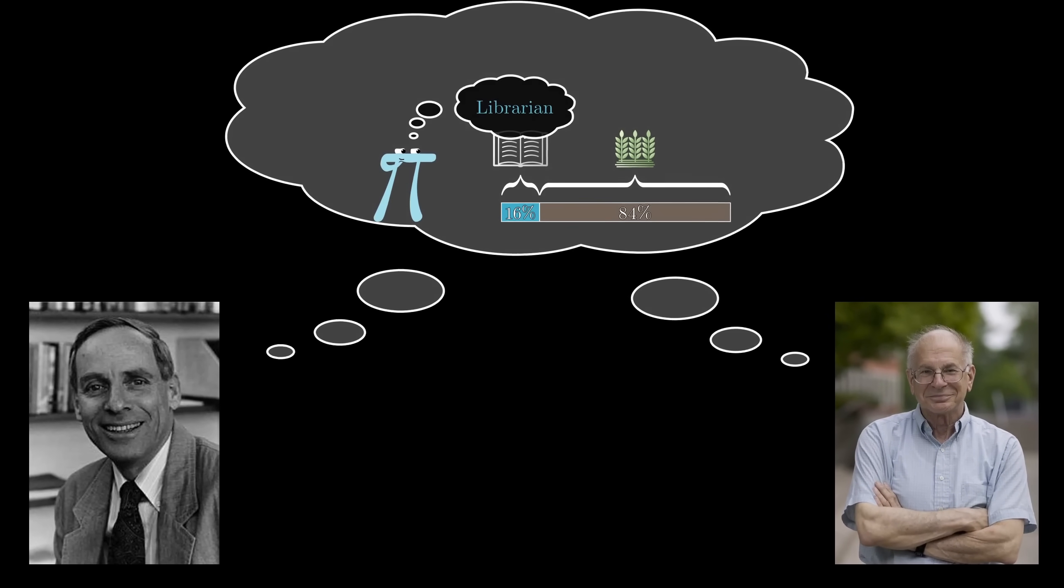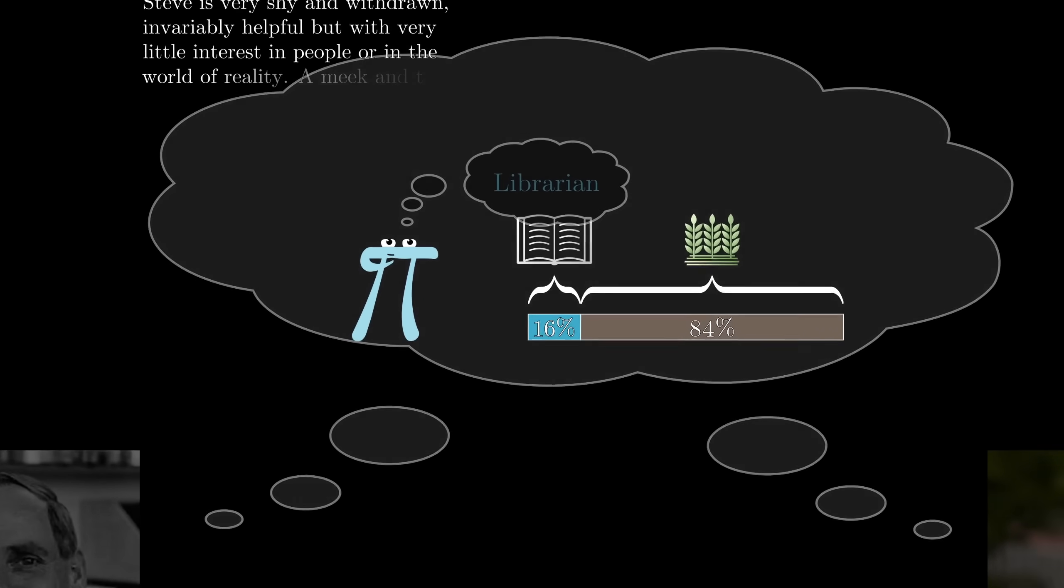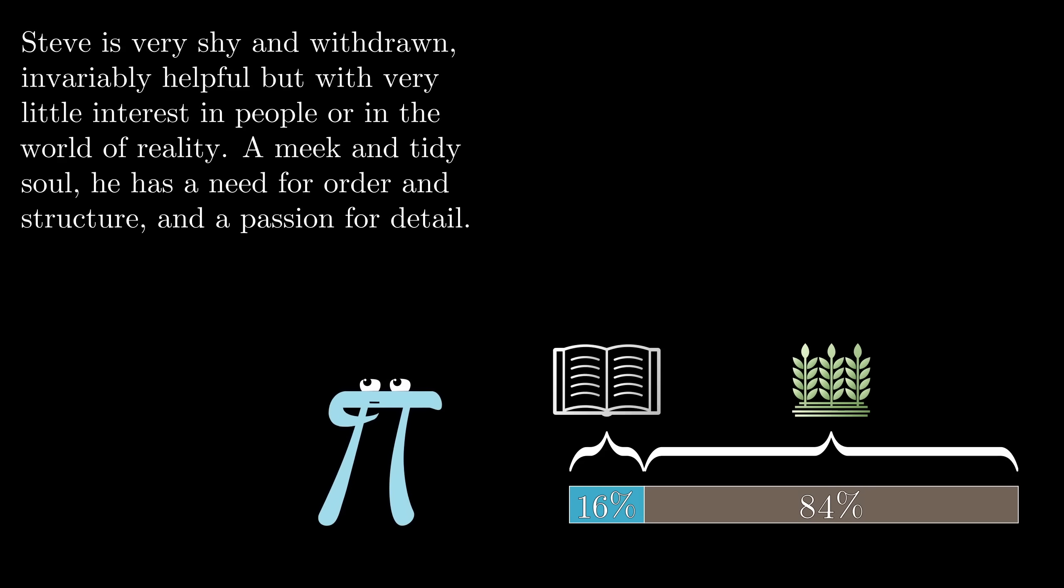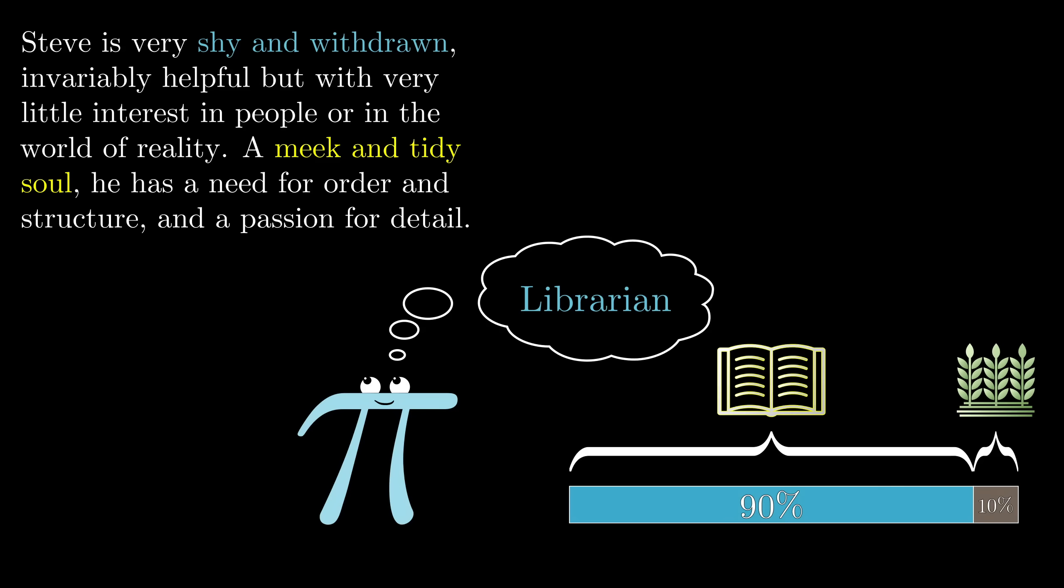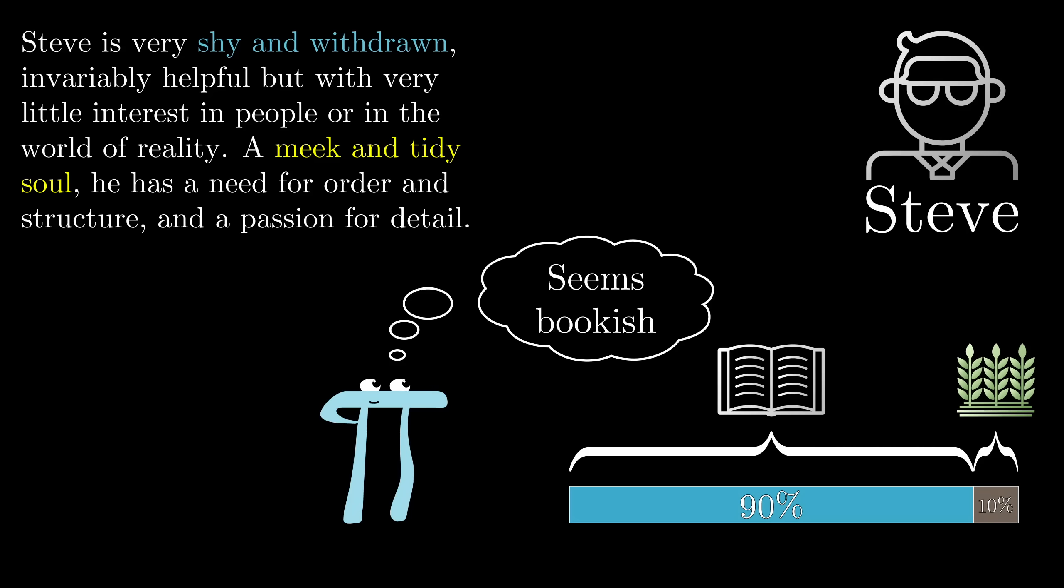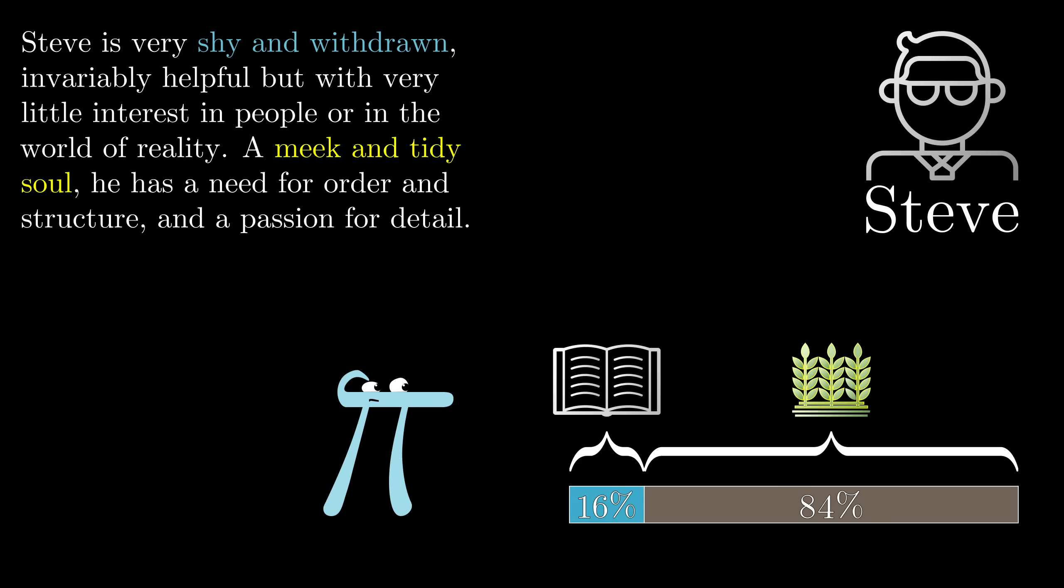The example with Steve, our maybe librarian, maybe farmer, illustrates one specific type of irrationality. Or maybe I should say alleged irrationality. There are people who debate the conclusion here, but more on all of that later on. According to Kahneman and Tversky, after people are given this description of Steve as a meek and tidy soul, most say that he's more likely to be a librarian. After all, these traits line up better with the stereotypical view of a librarian than a farmer. And according to Kahneman and Tversky, this is irrational.